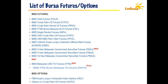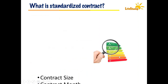The KLCI futures (FKLI) is based on the top 30 largest-cap stocks in Malaysia. Recently, in October 2018, we have a new product called the Bursa Malaysia 70 Futures, or FM70. This goes hand-in-hand with the KLCI futures — the KLCI futures is based on the top 30 largest-cap stocks, whereas the FM70 is based on the next top 70 largest-cap stocks, which are mid-cap stocks. It is gaining popularity, though the most common remains the crude palm oil.